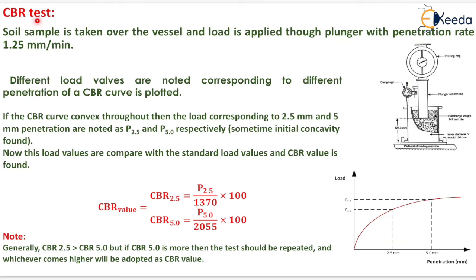Now the next method is the CBR test. Soil sample is taken over the vessel and load is applied through plunger with penetration rate of 1.25 mm per minute. It is shown here. Different load values are noted corresponding to different penetration of a CBR curve and a curve is plotted. If the CBR curve convex throughout the load corresponding to 2.5 mm and 5 mm penetration are noted as P2.5 and P5.0 respectively. Sometimes initial concavity is also found.